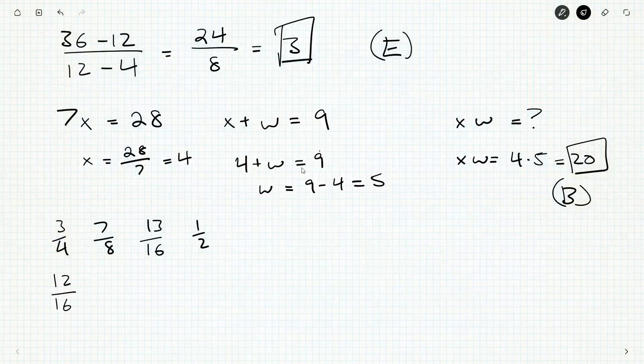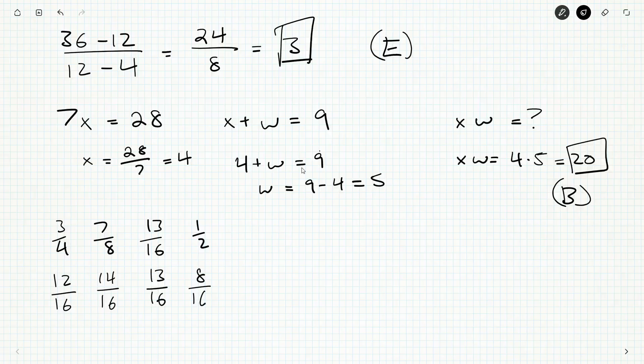we get twelve out of sixteen. Seven-eighths becomes fourteen-sixteenths. We have thirteen-sixteenths, and then we have eight-sixteenths.